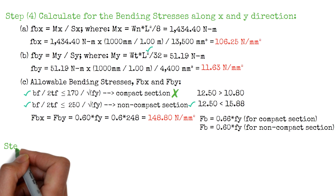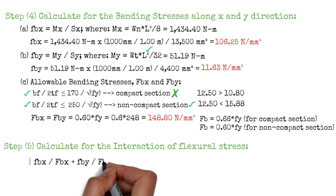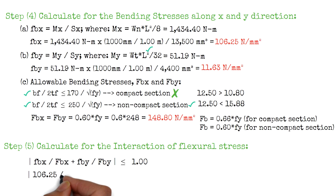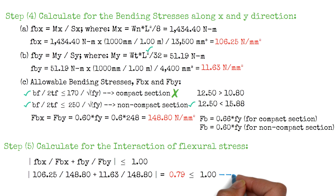The fifth step is to calculate the interaction of flexural stress using the equation: the absolute value of the sum of actual bending stresses divided by the allowable bending stresses in both directions, which should be less than or equal to 1. Substituting all values: 106.25 divided by 148.8, plus 11.63 divided by 148.8, gives a value of 0.79. Since the interaction of flexural stress equals 0.79, which is less than 1, it is safe to use the LC 100mm × 50mm × 15mm × 2mm with sag rods at the mid-span.